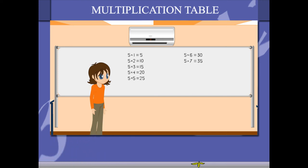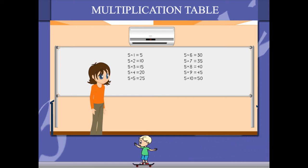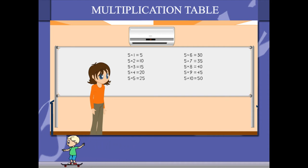5 7's are 35, 5 8's are 40, 5 9's are 45, 5 10's are 50.